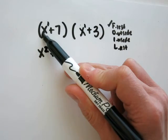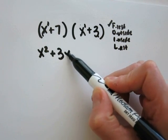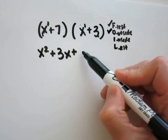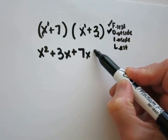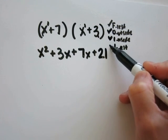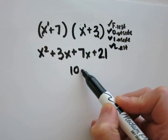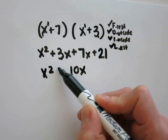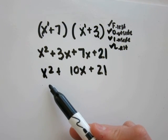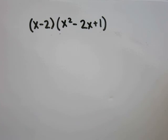Multiplying the outside numbers: x and 3, so x times 3 is 3x. Now the inside numbers are 7 and x, that becomes 7x. Now the last numbers: 7 times 3 is 21. Now I'll combine like numbers — 3x plus 7x becomes 10x — and carry down the rest. So my final answer is x squared plus 10x plus 21. Looking at the selections, that's the same as letter B.